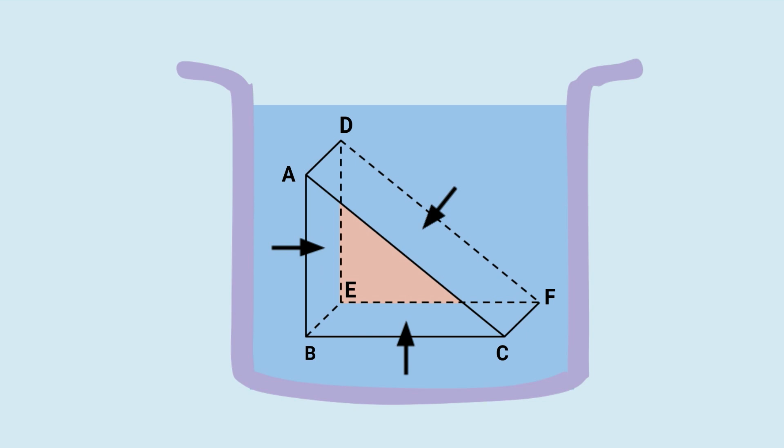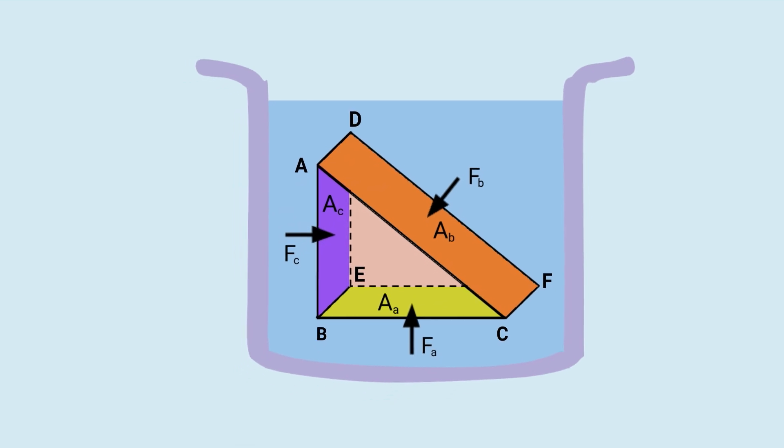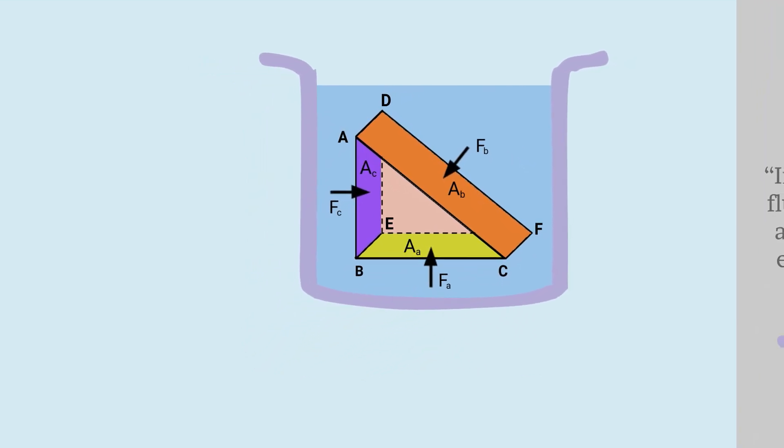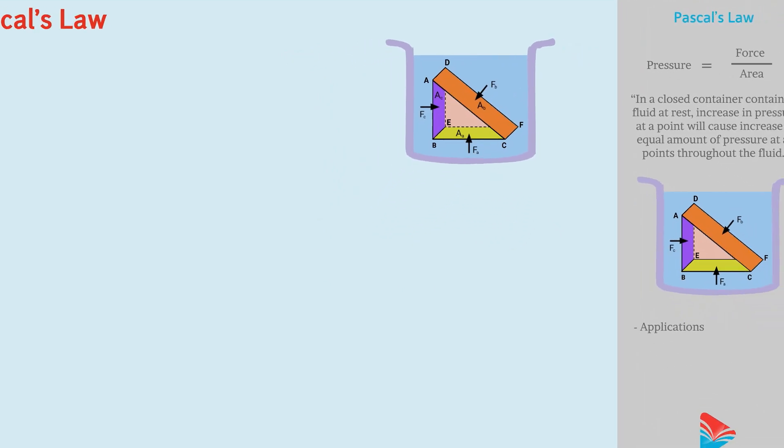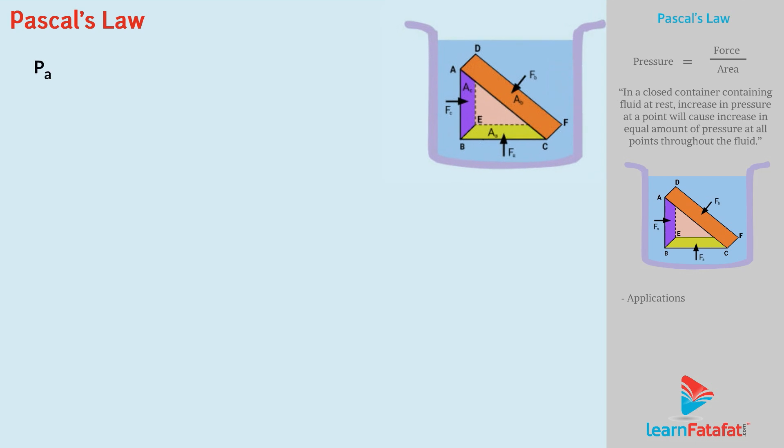Being in fluid, there will be forces on the object from all directions. If FA, FB and FC are the perpendicular forces exerted by liquid on the surfaces BEFC, ADFC and ADEB of areas AA, AB and AC respectively. Then the fluid exerts pressures PA, PB and PC on the right-angled prism given as PA equals to FA upon AA, PB equals to FB upon AB and PC equals to FC upon AC.